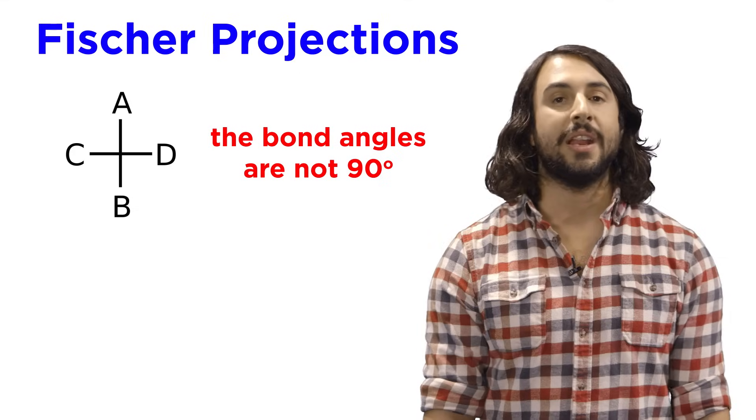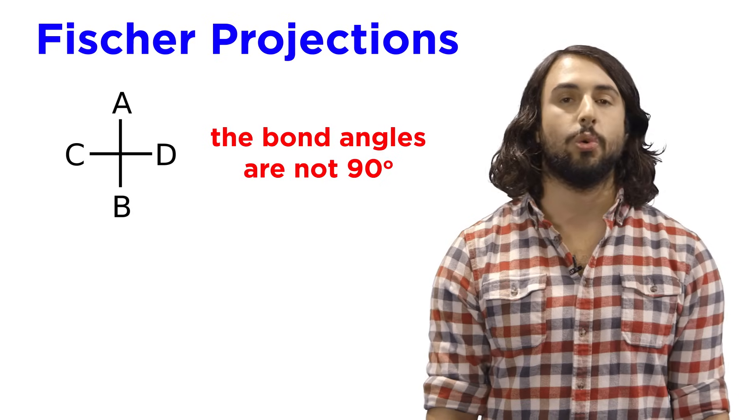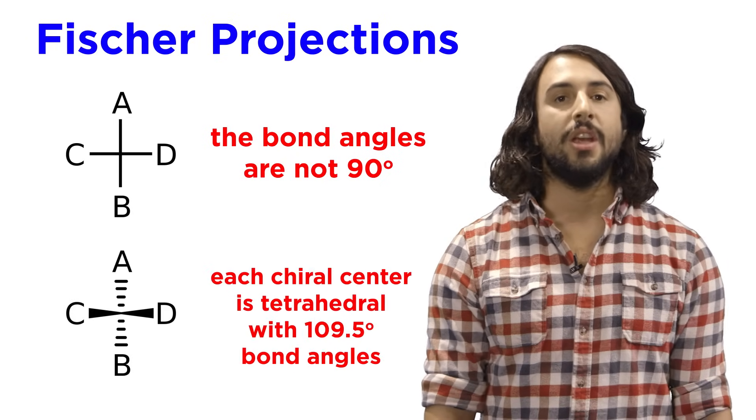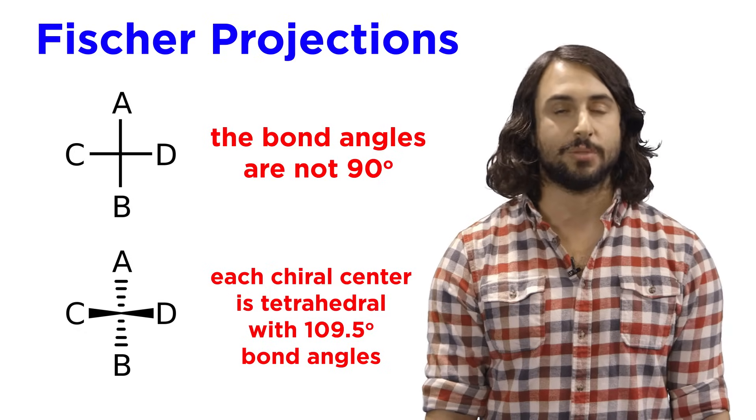However we choose to view it, it's important to realize that Fischer projections do not imply a flat molecule with 90 degree bond angles. These carbons are still tetrahedral. We just save time by drawing sugars this way.